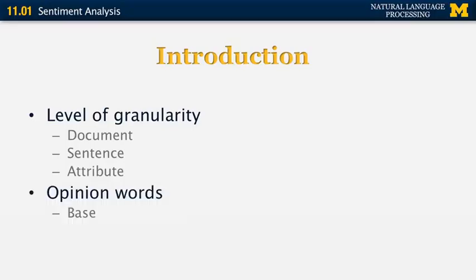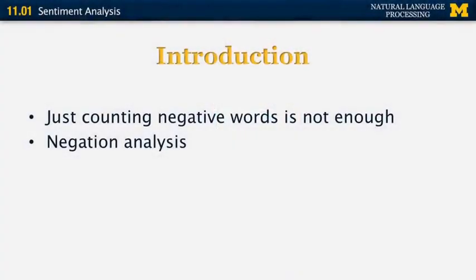Opinion words are important, and there are different types. There are base words such as 'pretty' or 'difficult,' and there can also be comparative ones — for example, 'this movie is better than the other one' or 'this processor is slower than this other one.' If we just count positive and negative words, we're not going to get a very good classifier, because some of them can be negated. If we say something is 'not difficult,' that means it's easy. So one important component of sentiment analysis is negation analysis, where you take all occurrences of negation phrases such as 'not' or 'didn't' and try to figure out what things they negate, so that you can possibly change the polarity.